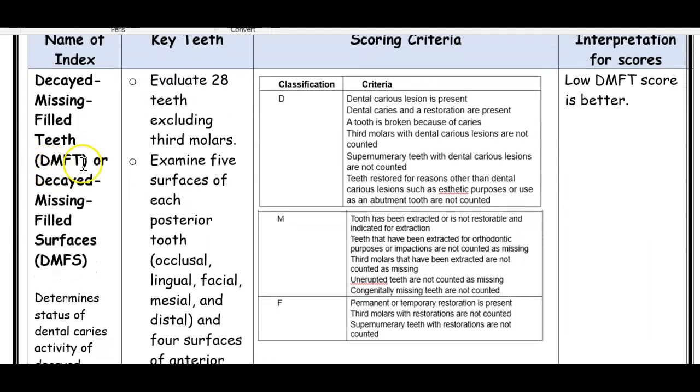So the first one we're going to look at is DMFT, also you could call it DMFS depending on what you're talking about. If we're talking about teeth, we say DMFT. We're talking about surfaces, then we say DMFS. Let's look at what D stands for. So D stands for decayed, M stands for missing, F stands for filled teeth. And then DMFS, again, decayed, missing, filled surfaces in this case.